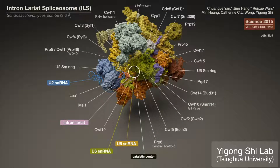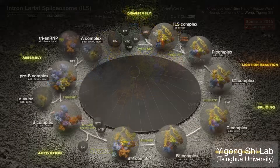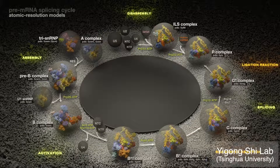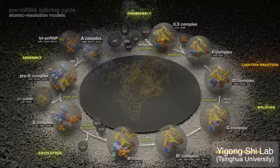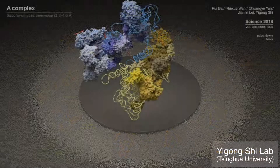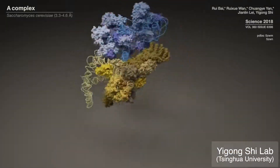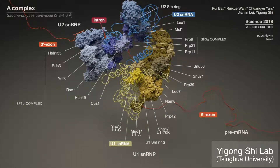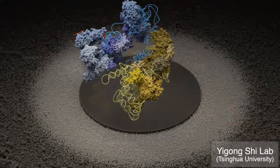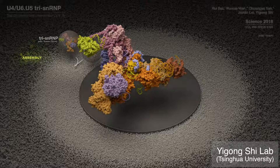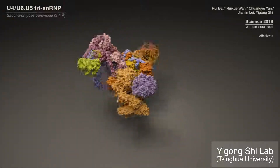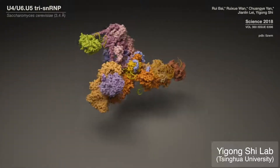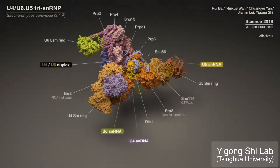The ILS catalyzed the termination of subsequent models, and the splicing cycle would soon be revealed with unprecedented structural clarity. As the Shi lab modeled the A complex with U1, U2 SNRPs assembled on pre-mRNA, and the U4, U6, U5 tri-SNRP, which assembles a central protein scaffold and RNA for future catalysis.